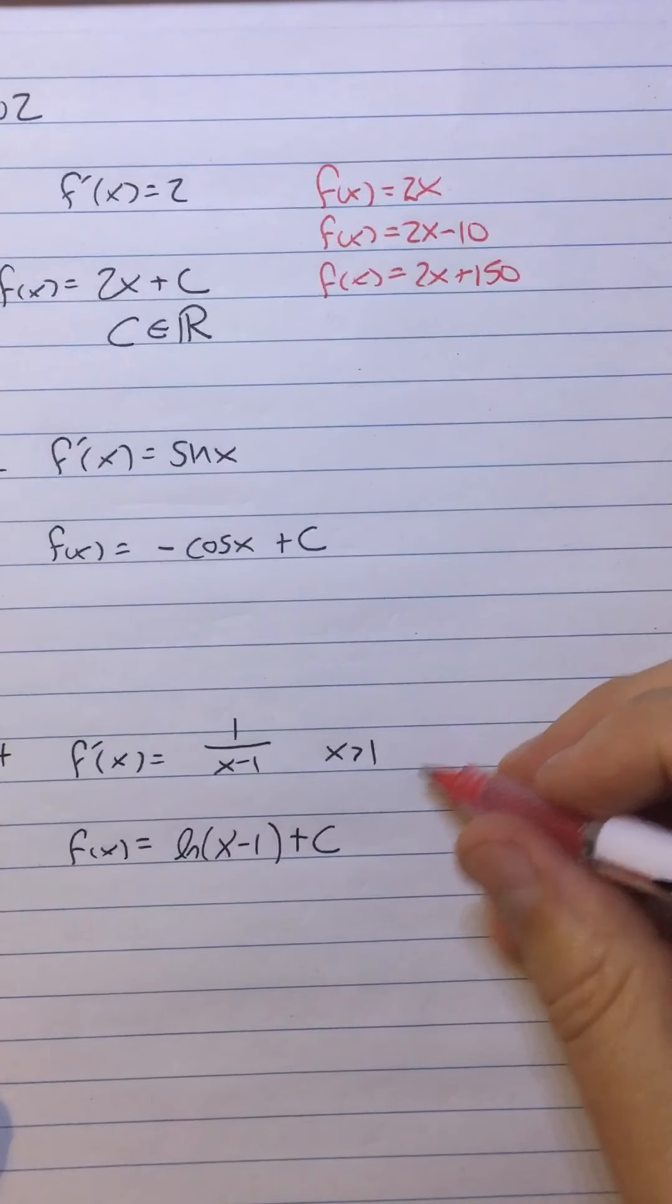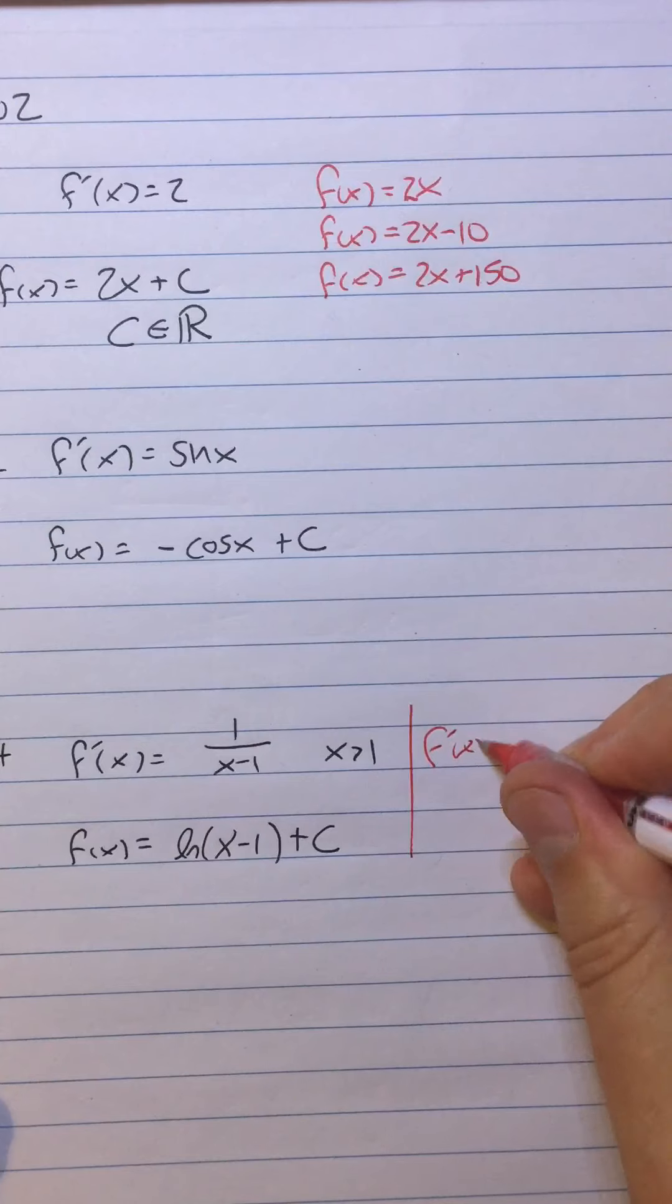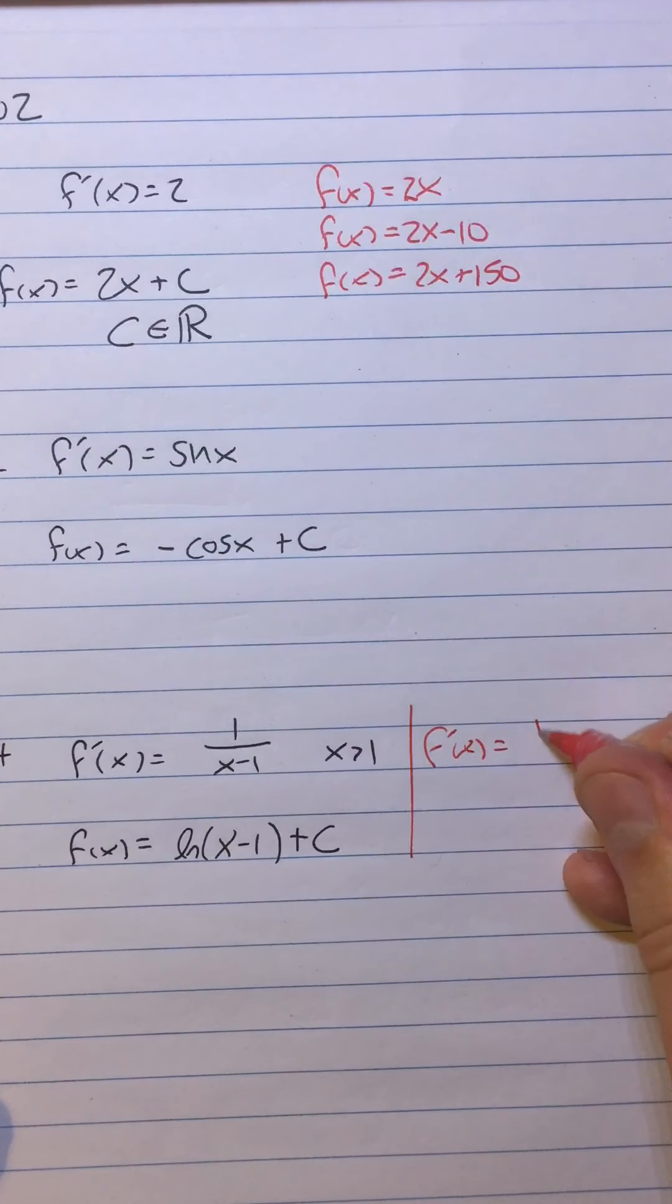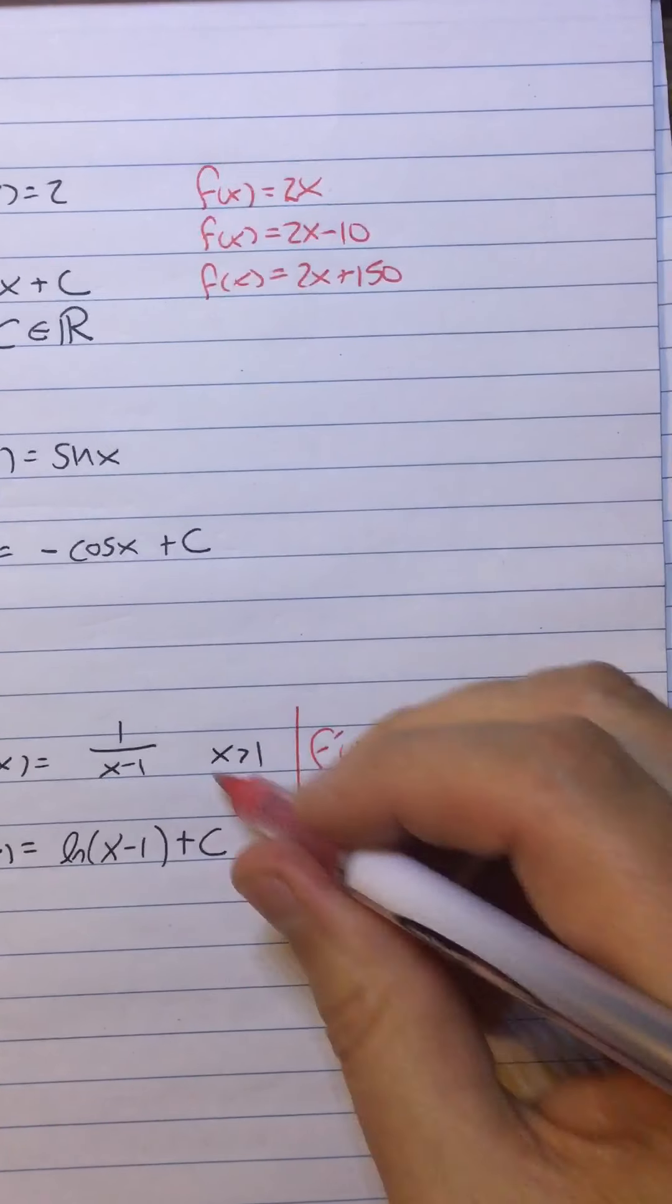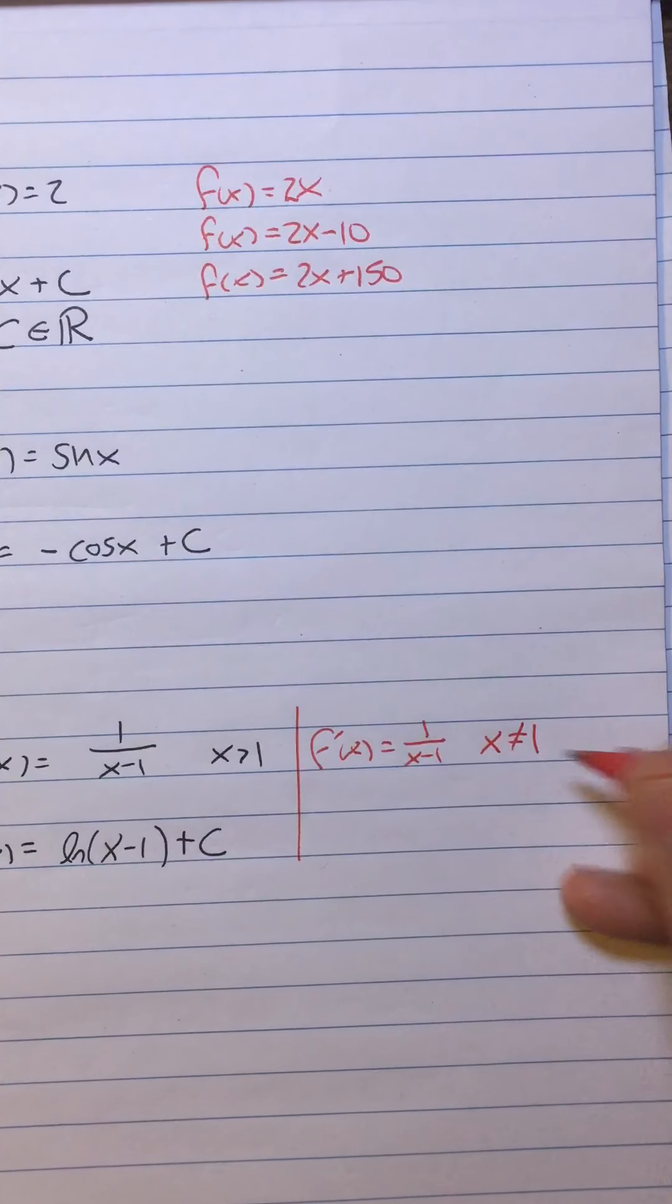By the way, here's a little aside. If they had said f prime of x equals 1 over x minus 1, and they didn't say x is greater than 1, they just said x is not equal to 1, do you have any idea what the antiderivative would be then?